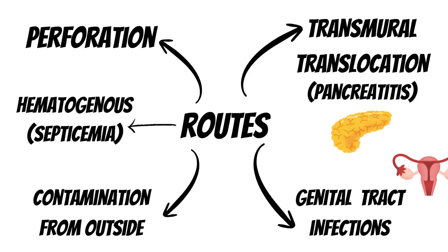Transmural translocation is another route, seen in conditions like pancreatitis, which is inflammation of the pancreas. Because of the inflammation occurring in the pancreas, there are changes in the peritoneal cavity with leakage of fluid. Along with the fluid there is a shift of bacteria from the intestines into the peritoneal cavity causing infection. In females, genital tract infection like pelvic inflammatory disease is a rich source of bacteria that can spread to the peritoneal cavity.